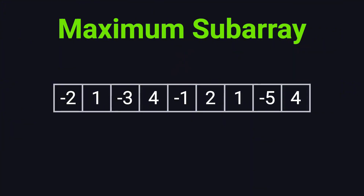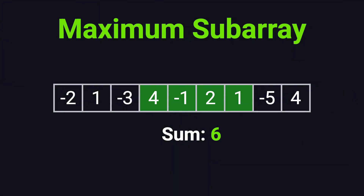So, what's the correct answer here? If we choose the subarray 4, -1, 2, 1, the sum is 6. That's the largest sum we can get from any contiguous subarray in this example. So the final answer is 6.